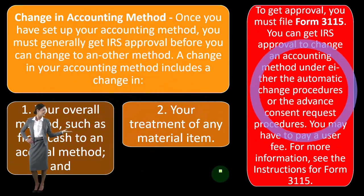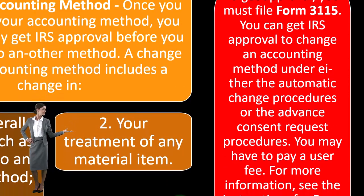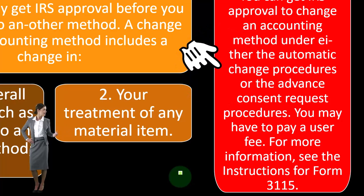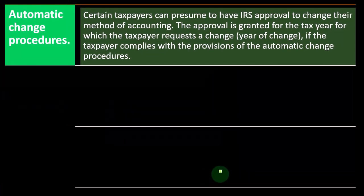To get approval, you must file Form 3115. You can get IRS approval to change an accounting method under either the automatic change procedure or the advanced consent request procedures. You may have to pay a user fee. For more information, see the instructions for Form 3115.